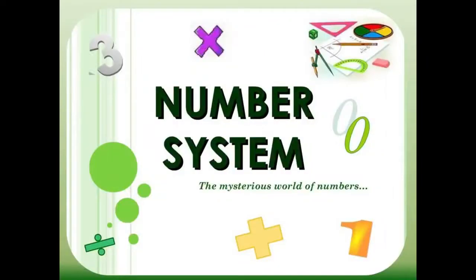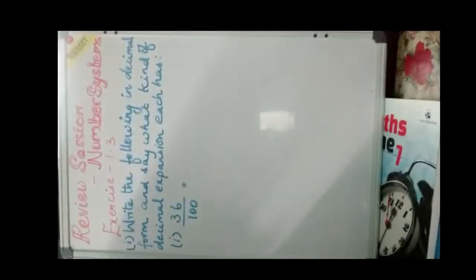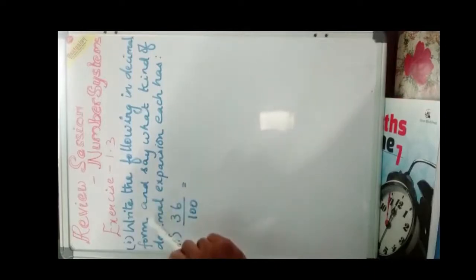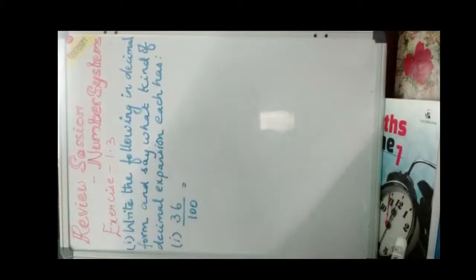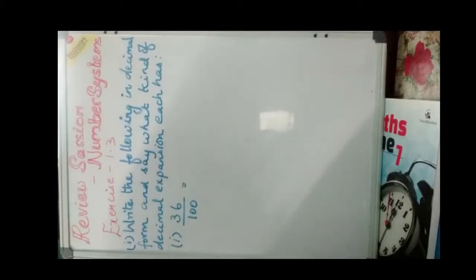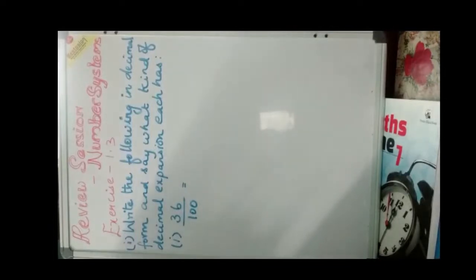Today's class we are already seeing number system and now we are going to see the book exercises. In today's class we are going to see the exercise problems — Exercise 1.3. The first question is: write the following in decimal form and say what kind of decimal expansion each has. We need to convert fractional numbers into decimal form and determine whether each is a terminating, terminating recurring, terminating non-recurring, or non-terminating non-recurring irrational number.